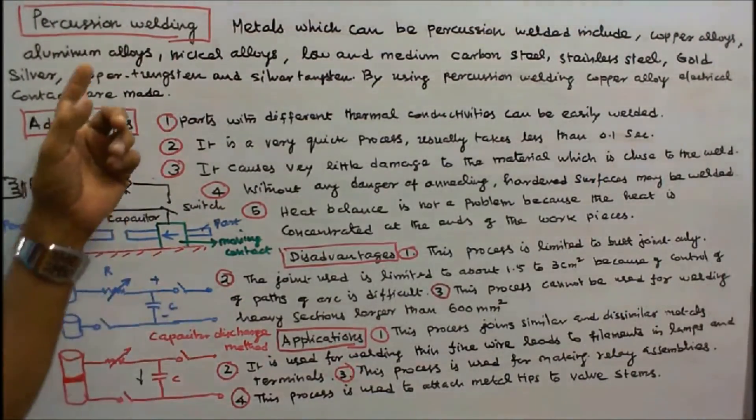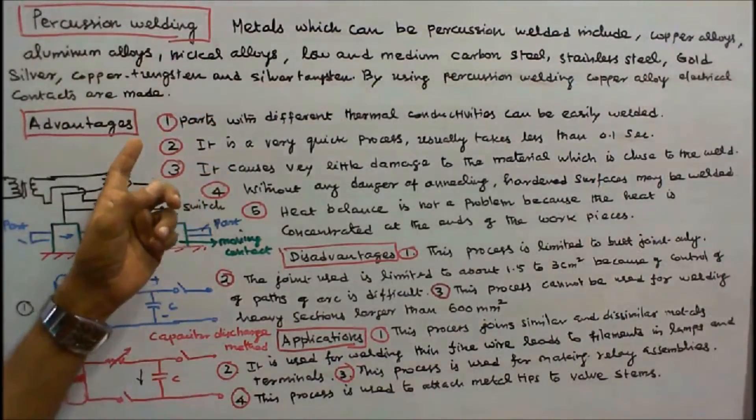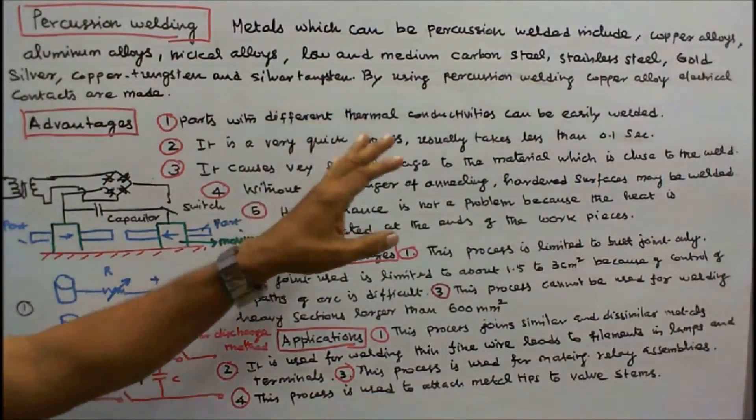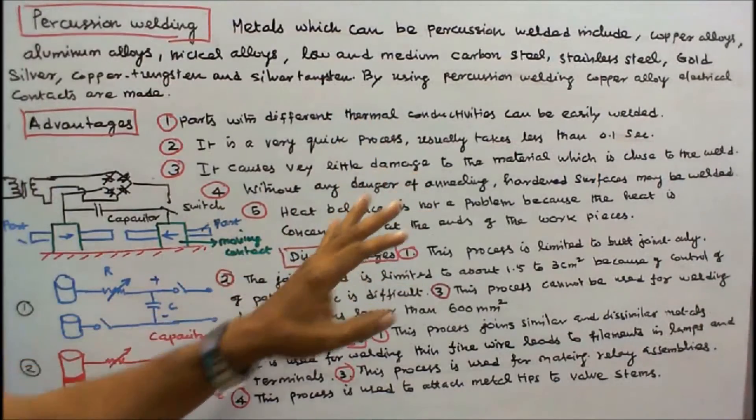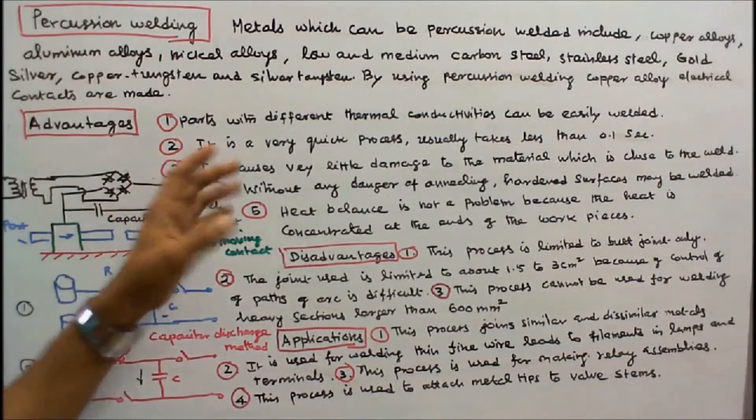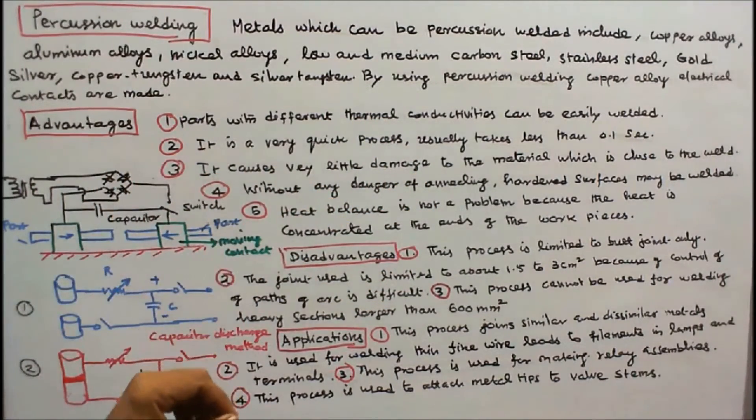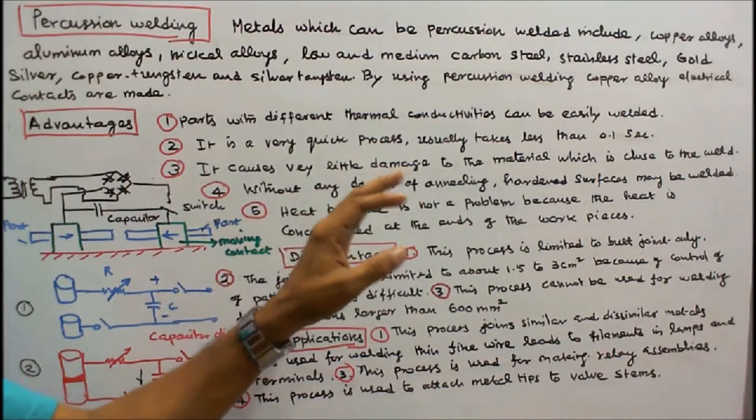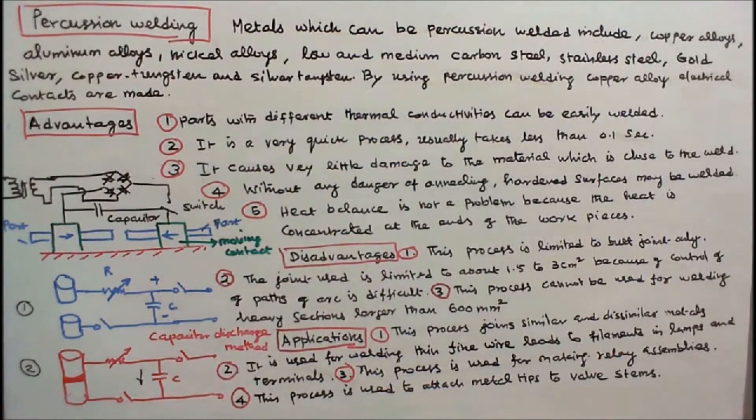Advantages of percussion welding are: number one, parts with different thermal conductivities can be easily welded. Number two, it is a very quick process, usually takes less than 0.1 seconds. Number three, it causes very little damage to the material which is close to the weld.